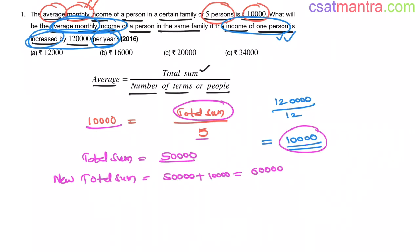Now we want average monthly income, the new average after increase in 10,000 per month. Now this is total sum. What is total sum? 60,000. 60,000 by number of people. This is same my friends, 5. Now 60,000 by 5 is 12,000. So our answer is A.